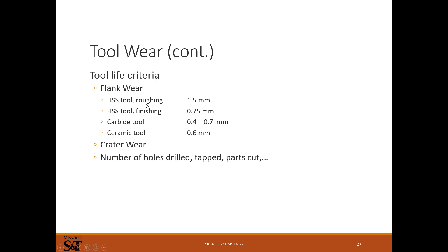Criteria for tool life: for carbide tools you usually scrap a tool when you've lost about 1.5 mm of material. For high speed steel, you might scrap it after losing about 0.75 mm — that's about 60 thousandths for carbide and 30 thousandths for high speed steel. For ceramic, maybe 0.6 mm, about 20–25 thousandths of wear. Again, on these harder tools you usually chip them, and that's when you're done — unless you're doing mass production with everything perfectly set up, you'll probably end up breaking the cutting edge before you actually wear these down.